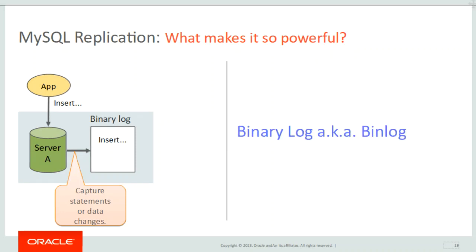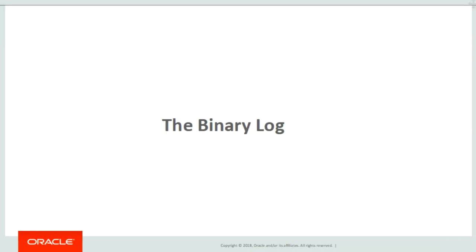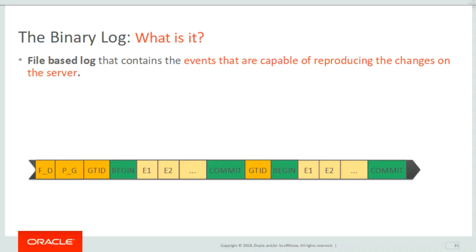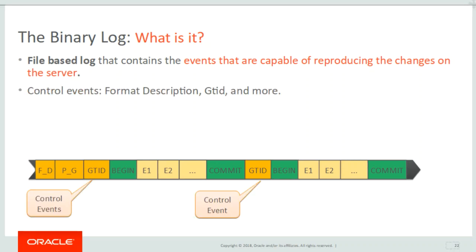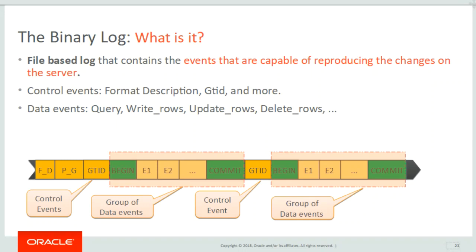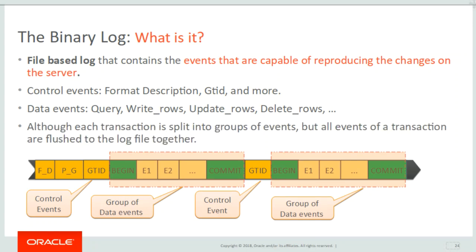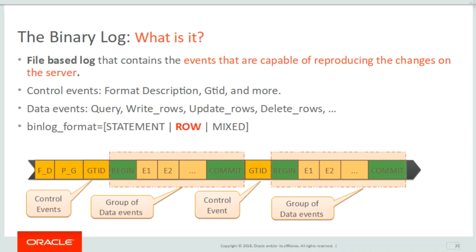So what makes MySQL replication so powerful? It is the binary log, also known as bin log. The binary log is a file-based log that contains the events capable of reproducing the changes on the server. It contains control events, which consist of metadata information about the server and bin log itself, and data events, which consist of actual data modifications. These are sent in a group into the binary log — although each transaction is split into groups of events, all events of a transaction are flushed to the log file together. The bin log format controls the way changes are logged; allowed values are statement, row, and mixed. In this video, the default row mode is used, which captures data changes into the binary log.